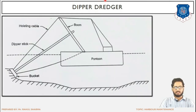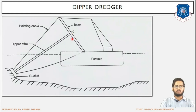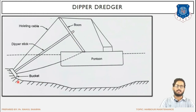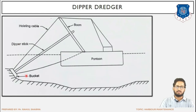The second type is the dipper dredger. The boom gives the alignment or direction for the dredging operation. The dipper stick is perpendicular to the boom and connects the boom to the bucket. The bucket is used for filling the excavated material. The hoisting cable raises or lowers the bucket. The pontoon is a floating platform on which the dredger is placed.